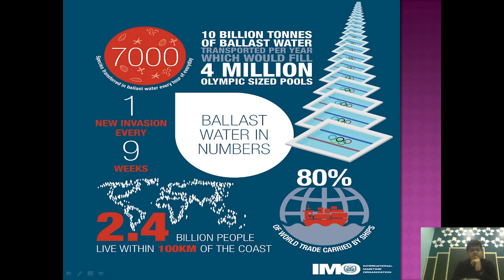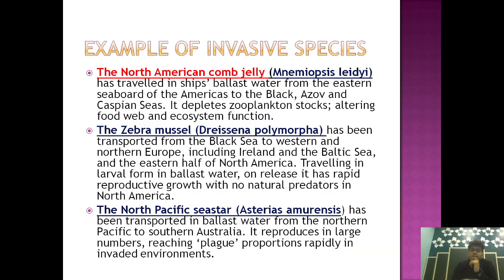Through this IMO diagram, we can see that 10 billion tons of ballast water is transported per year, which is equal to 4 million Olympic-sized pools. One new invasion takes place every nine weeks. Also, 80 percent of world trade is carried by sea, and 2.4 billion people live within 100 kilometers of the coast.